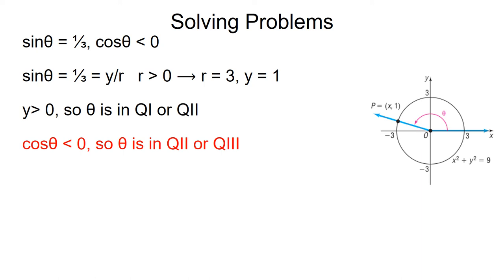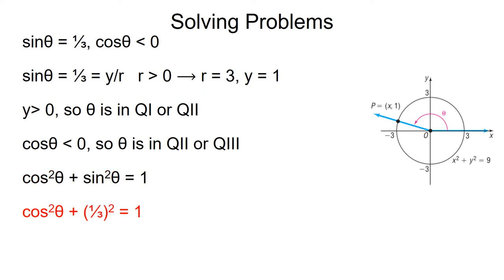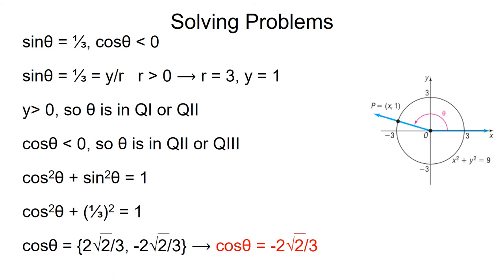We'd like to find cosine theta, so let's use the trig identity: cosine squared theta plus sine squared theta is equal to 1. We substitute in 1/3 for sine theta, and then we can solve for cosine theta. We obtain 2 square root of 2 over 3 and minus 2 square root of 2 over 3 as possible answers. Since theta is in quadrant 2, cosine theta must be negative 2 square root of 2 over 3.